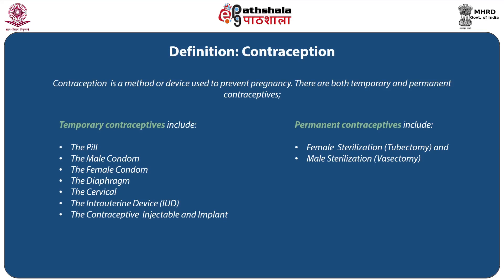Contraception, by definition, is a method or device used to prevent pregnancy. There are both temporary and permanent contraceptives. Temporary contraceptives include the pill, the male condom, the female condom, the diaphragm, the cervical diaphragm, the intrauterine device or IUD, the contraceptive injectable and implant. Permanent contraception includes female sterilization, which is called tubectomy, and male sterilization called vasectomy.